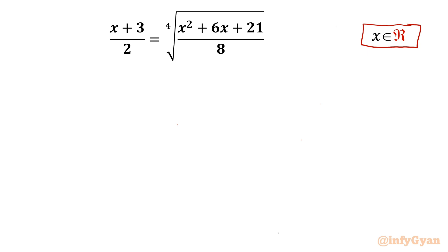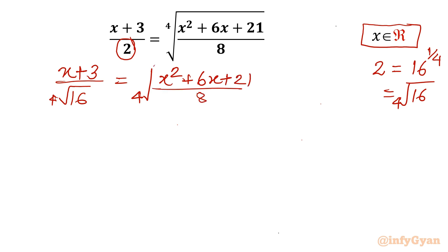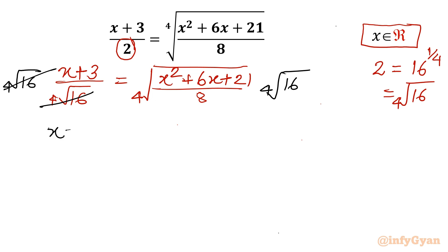By using one exponent law we can write 2 as 16 to the power 1 over 4, or the 4th root of 16. So let me write 4th root of 16 in the denominator of the LHS. So I will write LHS as x plus 3 over 4th root of 16. Now let's multiply both sides by the denominator of LHS, that is 4th root of 16. These two terms cancel, so LHS has x plus 3 only.